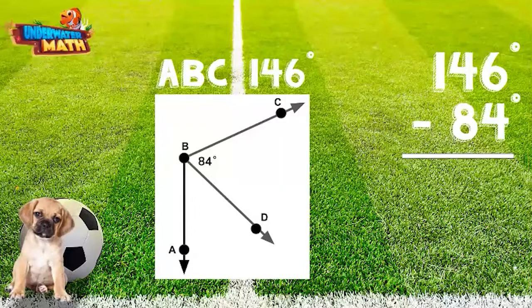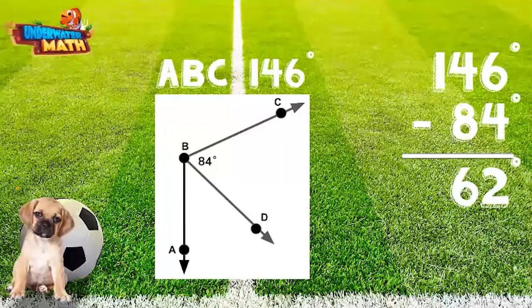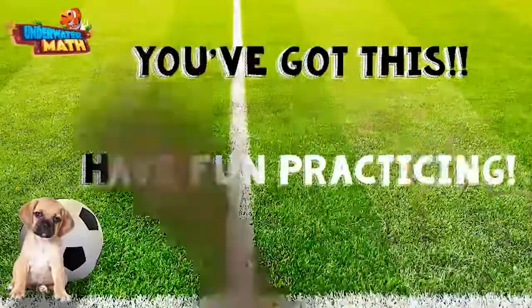146 degrees minus 84 degrees is 62 degrees. Angle ABD is 62 degrees. You are ready to practice on your own. Have fun!